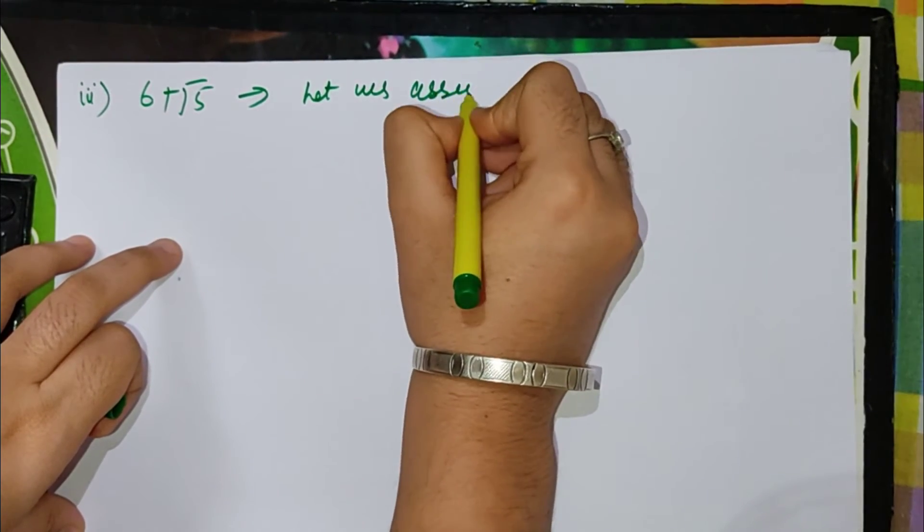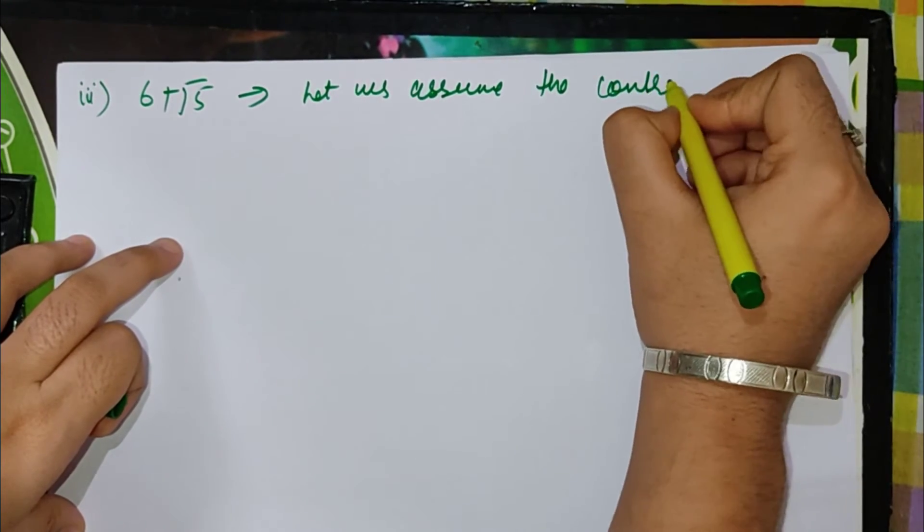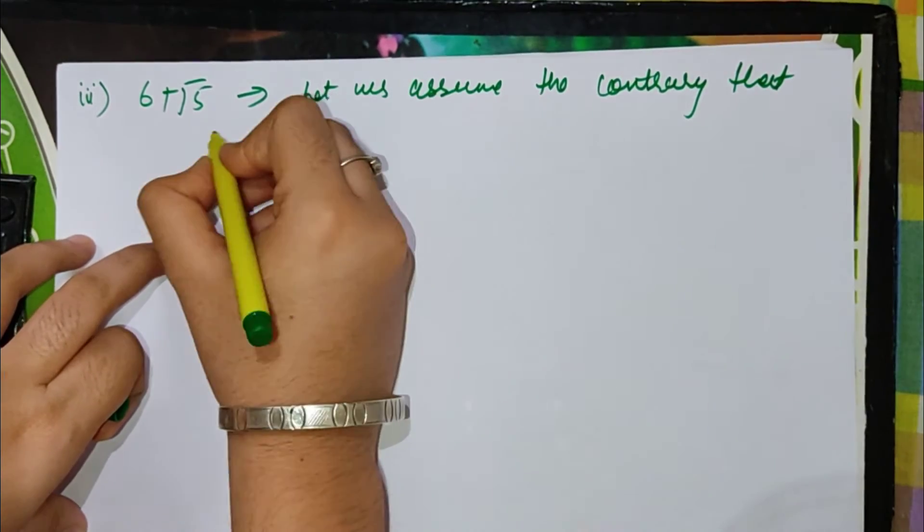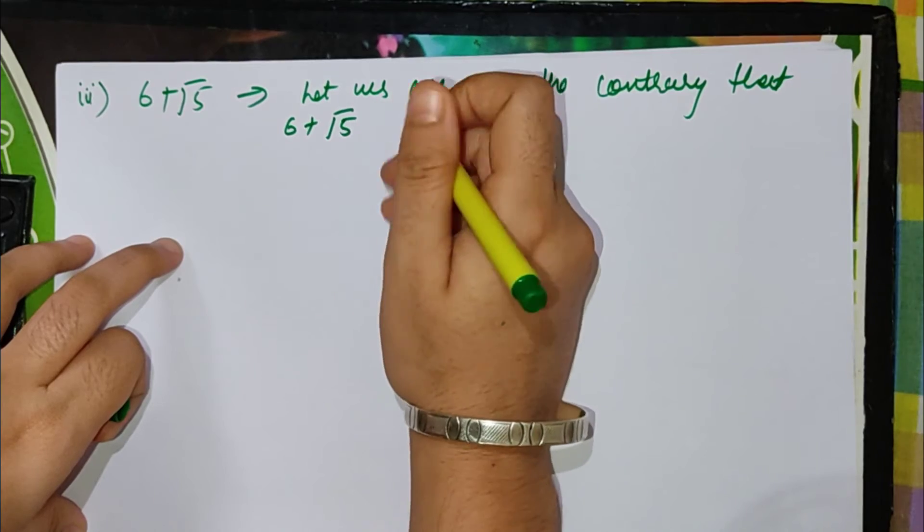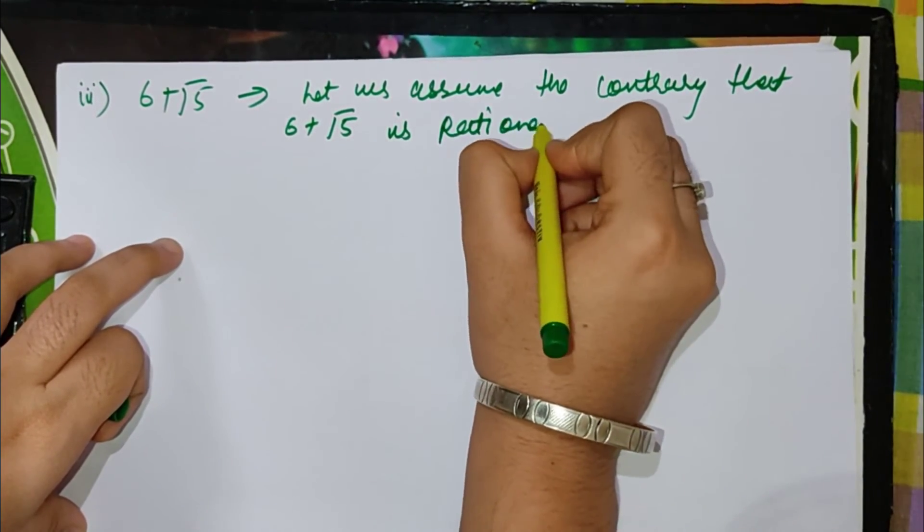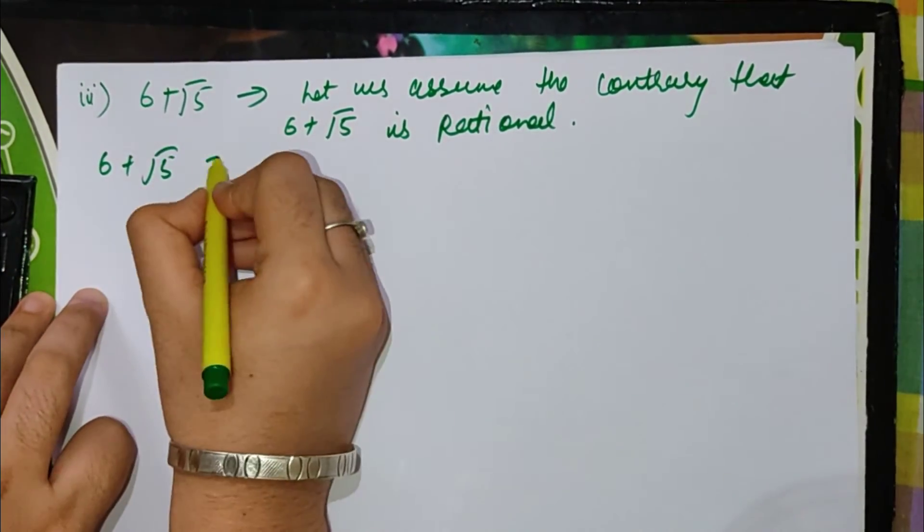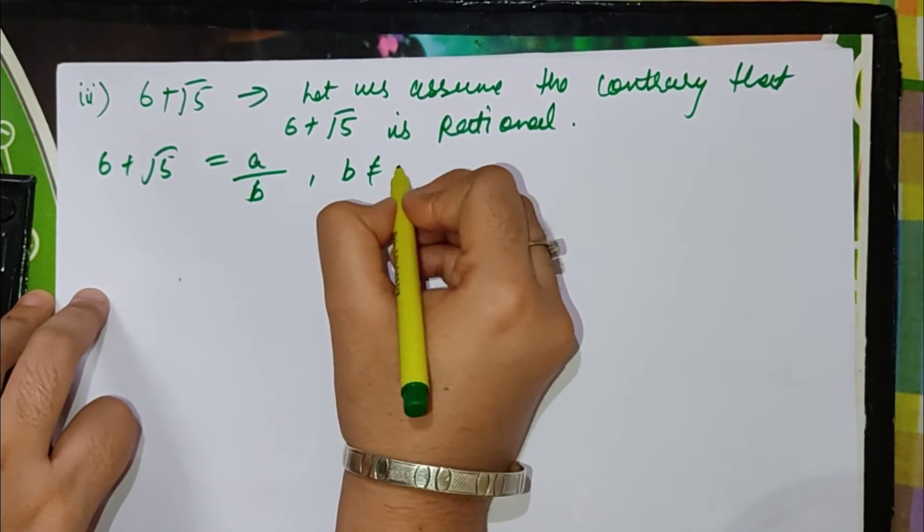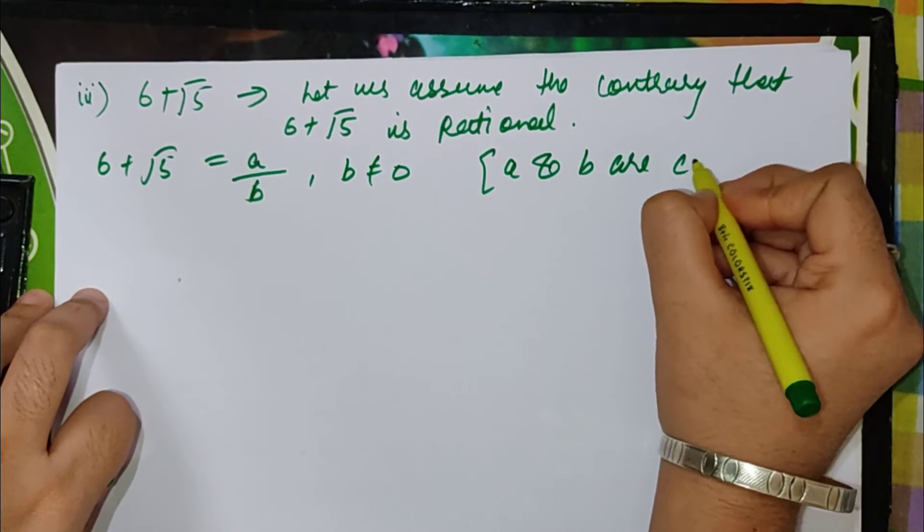Let us assume the contrary that 6 plus root 5 is rational. This means 6 plus root 5 equals a by b where b is not equal to 0, and a and b are co-primes.